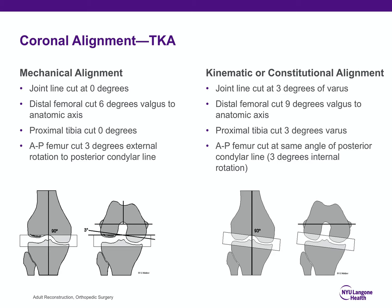Mechanical alignment versus kinematic (constitutional varus) alignment: in mechanical alignment, the joint line is cut at zero degrees — zero degrees in both extension and flexion. In kinematic alignment, you restore that natural three degrees of varus. For the purposes of this test, focus on mechanical alignment.